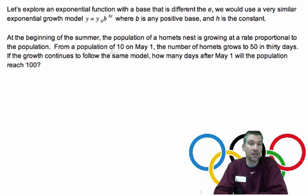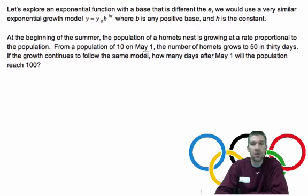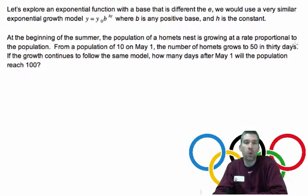We're going to look at a population of 10 on May 1st. The number of hornets grows to 50 in 30 days. And it says that they're growing at a rate proportional to population.